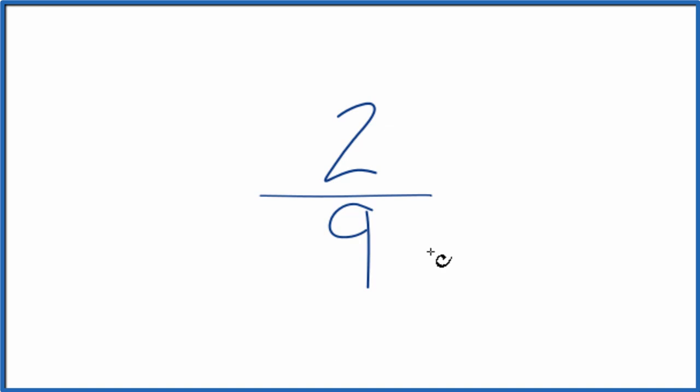To do that, we need to find a common factor, something that goes into both two and nine evenly. We're looking for the greatest common factor.